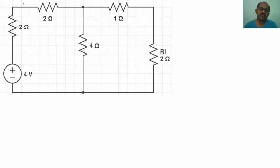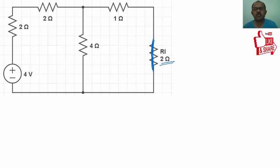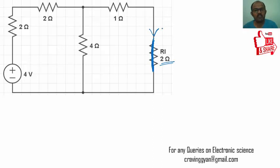Let us solve the first problem. The circuit has a practical voltage source with impedances of 2 ohms, 2 ohms, 4 ohms, 1 ohm, and a load resistance of 2 ohms. The first step is to find Norton's current. To find Norton's current, replace the load impedance with a short circuit — the current flowing through that short circuit is Norton's current. This is different from Thevenin's, where you replace the load with an open circuit.